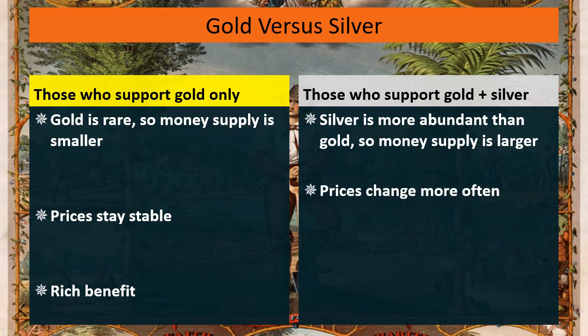The problem is prices change more often. If the value of your money fluctuates and a dollar isn't really worth a dollar anymore, sometimes you only get 60 cents worth of goods out of it.